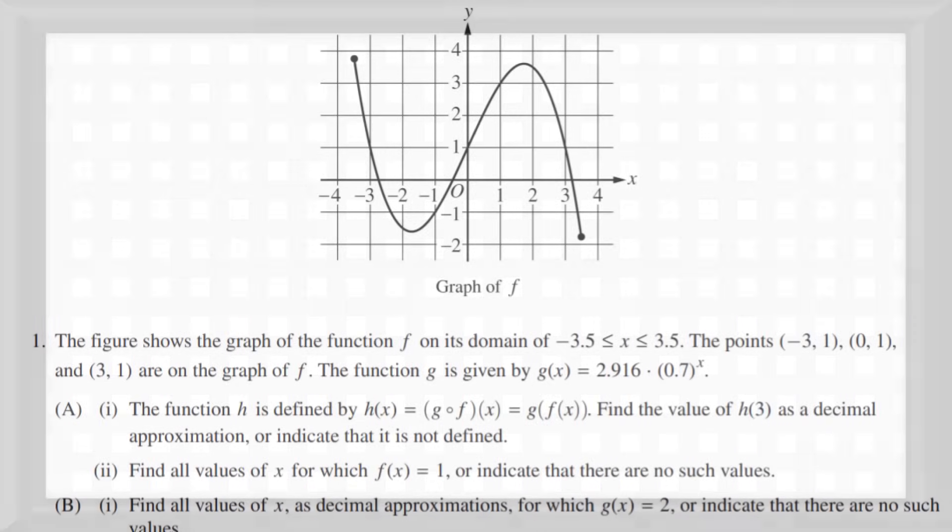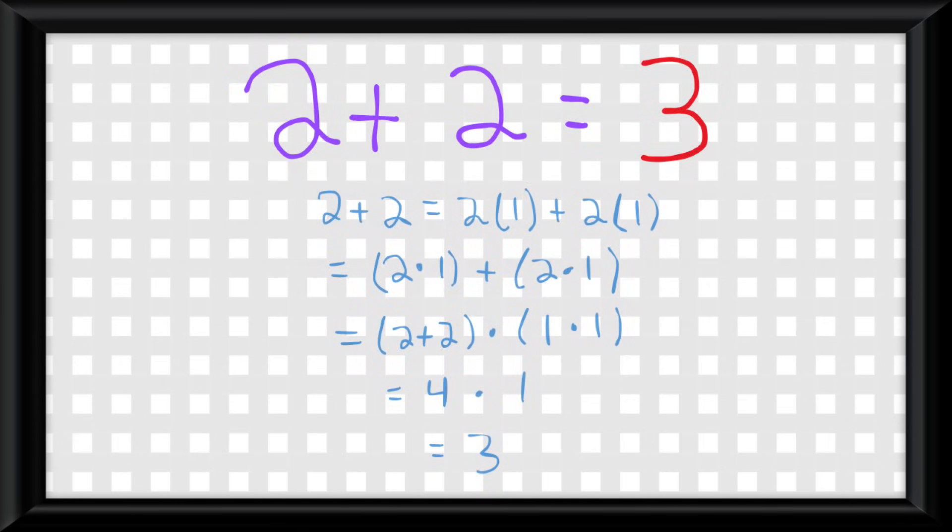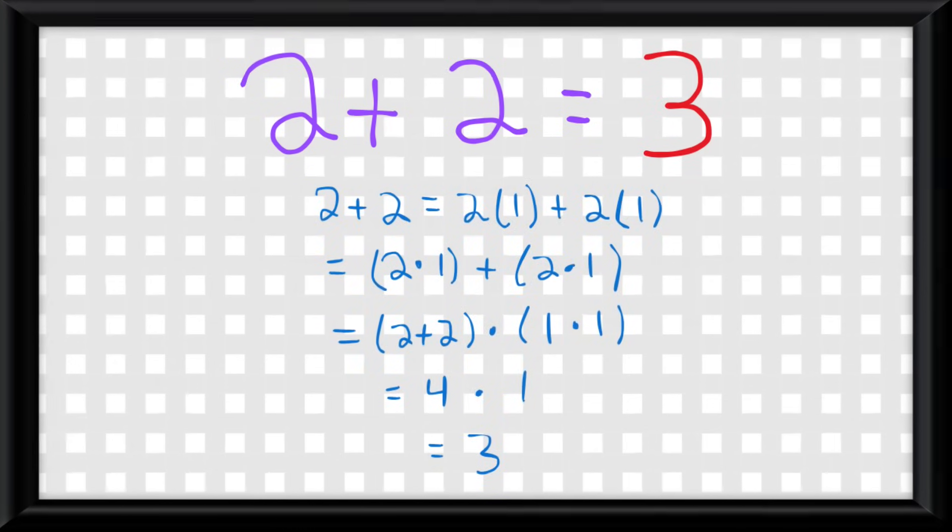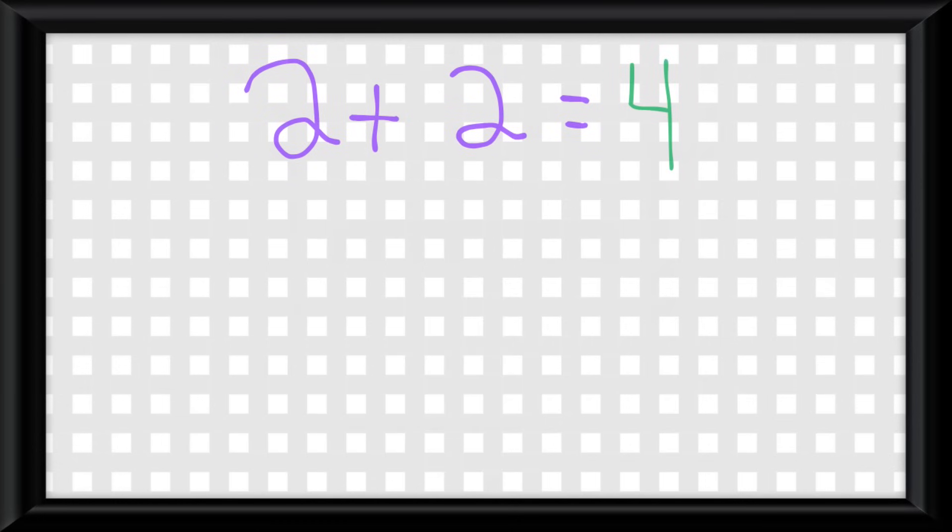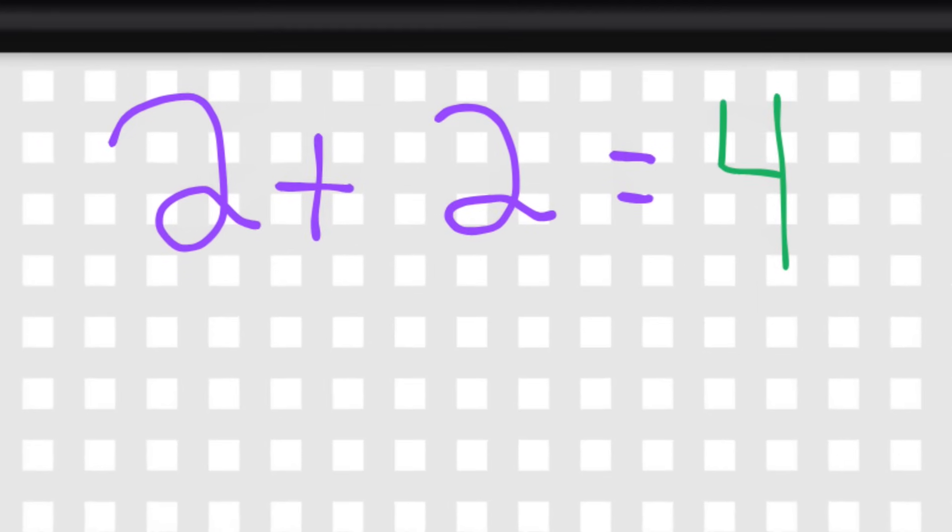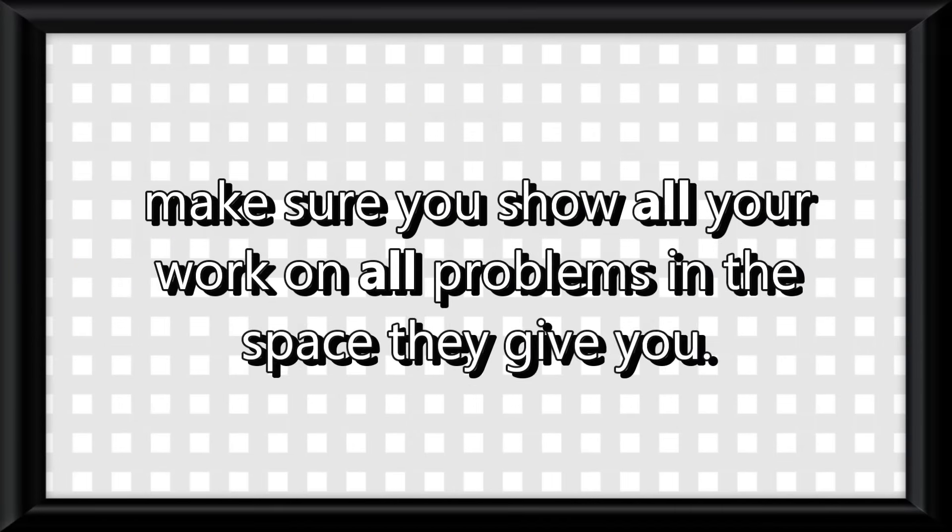And there we go. We have solved FRQ 1. I should mention that even if you don't get the answer right to one of these problems, College Board will give you partial credit on some of the questions as long as you show your work, which could even be the difference between a 3 and a 4, or a 4 and a 5. And sometimes they won't even give you any points if you show no work, even if you get the question right. So make sure you show all your work on all problems in the space they give.